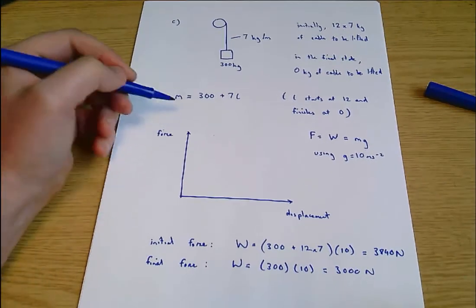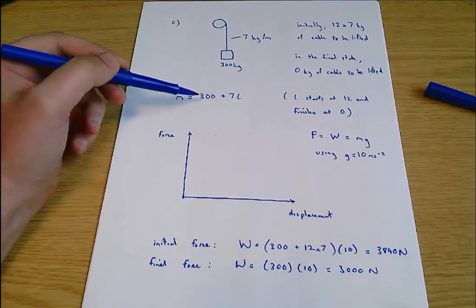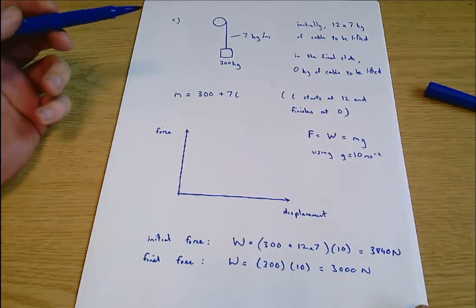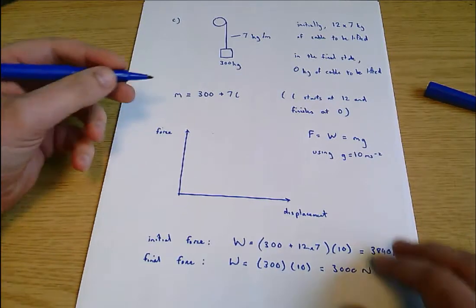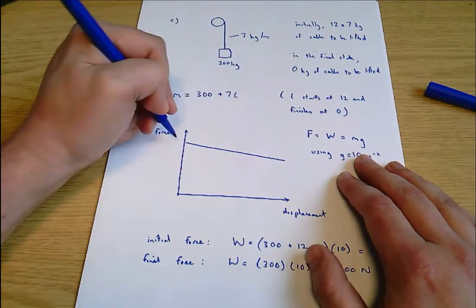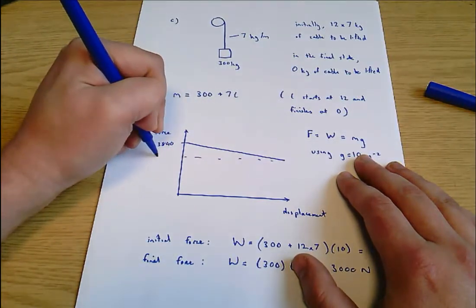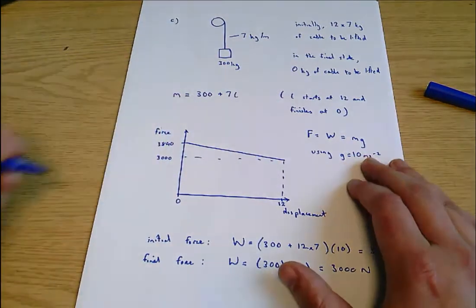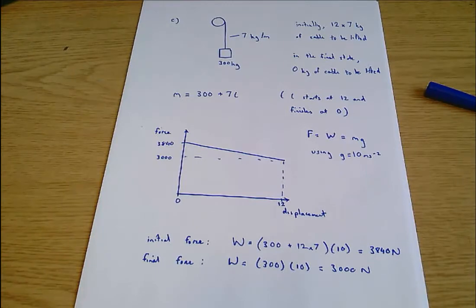In between, because we've got this relationship here, what I can tell from this relationship is that it's going to be a straight line relationship between mass and the length of cable that's still unreeled. You can think of this as being like y equals mx plus c, but on a slightly different graph. This is what we call a linear relationship, which means there's a straight line. So that means my force displacement graph is going to be a straight line that goes from 3840 to 3000. That is a displacement of 12 meters and that is a displacement of zero meters.